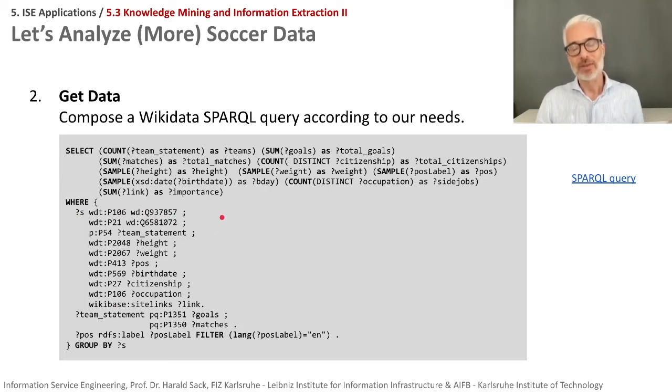So what we have here in this statement is of course we want to find out is it a soccer player, is it a female woman soccer association player? So this is the first thing we want to find out here. We get then the team statement as in the example we get the height we get the weight the position played the birth date of the person the citizenship all the occupations we get here via wikibase site links all of the Wikipedia pages that we are interested in and then for the team statement that we selected here we have then to use another here namespace PQ we want to have the number of goals and the number of matches played.